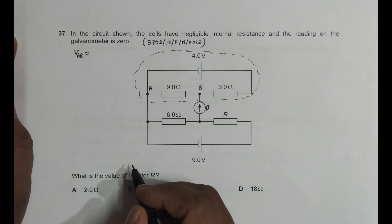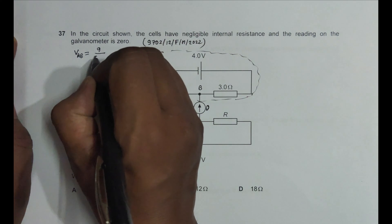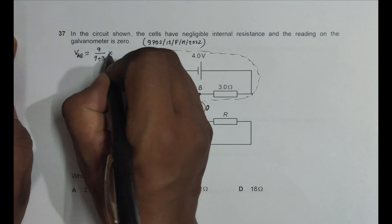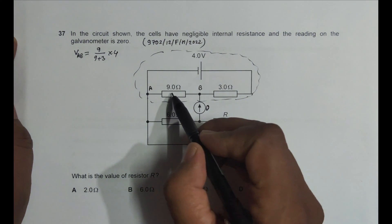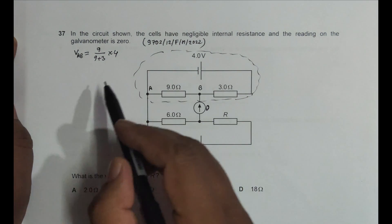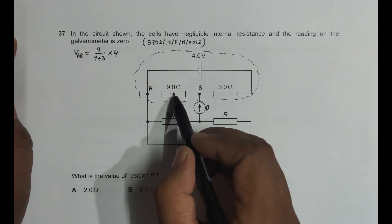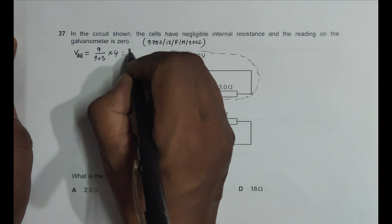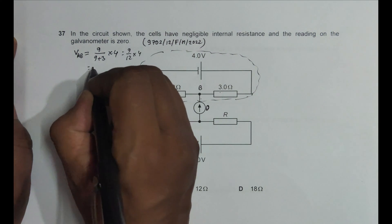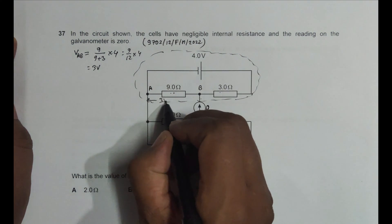V_AB is equal to the PD across this thing AB, should be equal to 9 by 9 plus 3 into this 4. So this 4 volt is divided into two resistors, so the PD across this should be equal to this resistance by total resistance into this 4. So it will be equal to 9 by 12 into 4 equal to 3 volt. So this voltage here is 3 volt.